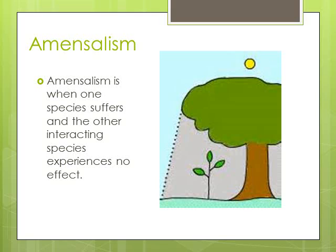Amensalism is when one species suffers and the other interacting species experiences no effect. An example of amensalism would be a big tree blocking the sunlight of a nearby plant. The tree is unaffected, but the plant is harmed because it doesn't receive as much sunlight as it should.